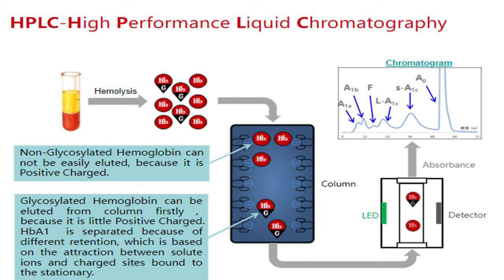In the HPLC method for HbA1c detection, various types of hemoglobin are loaded onto an analytical column. Non-glycosylated hemoglobin cannot be eluted easily from the analytical column because it is more positively charged compared to glycohemoglobin molecules. Glycosylated hemoglobin can be easily eluted because it carries little positive charge. Glycated hemoglobin and other hemoglobin components are separated according to their different electrical charges, and the retention times for each fraction determine the identity of the component.